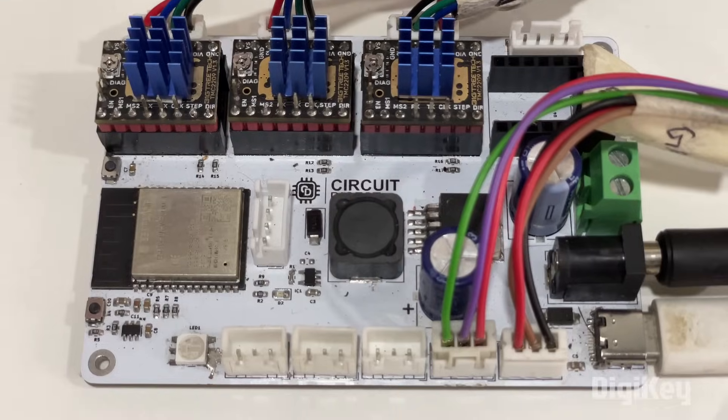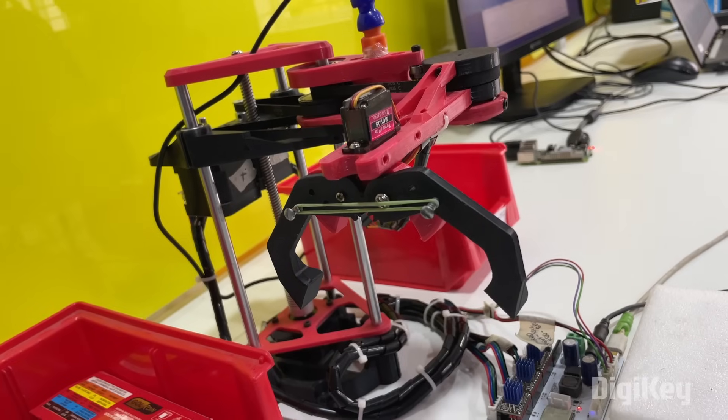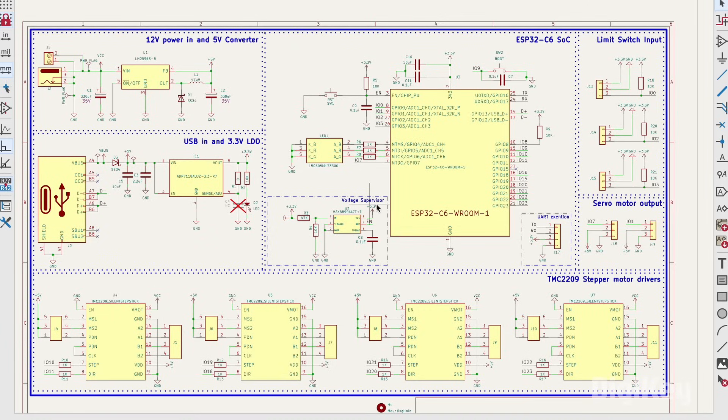Now that the robotic arm is ready, let's look at this controller board to which we have connected three stepper motors and the servo motor. To understand better, let's look at the schematics for this controller board.